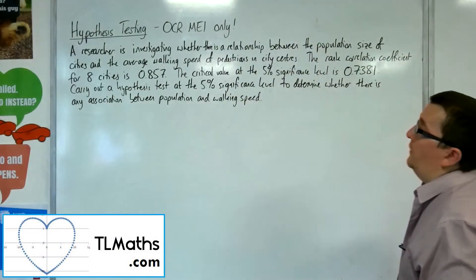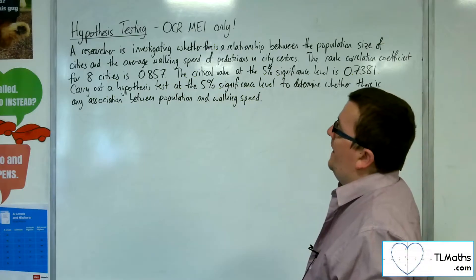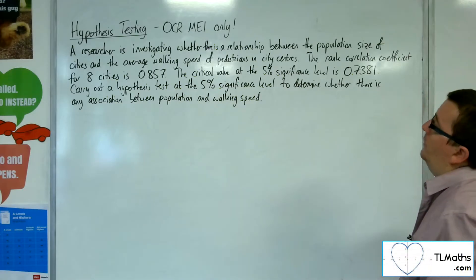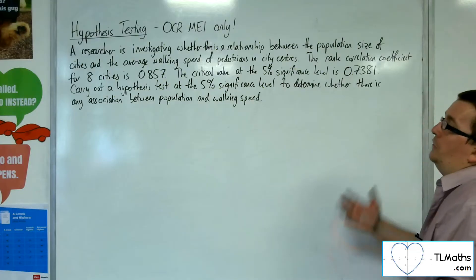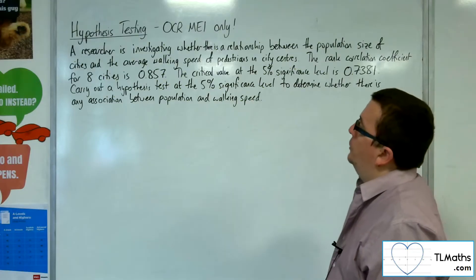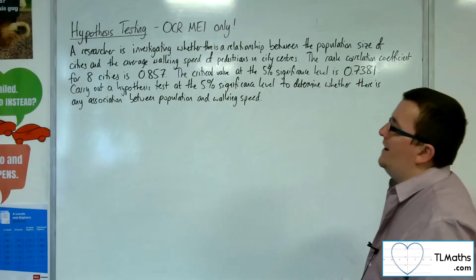A researcher is investigating whether there is a relationship between the population size of cities and the average walking speed of pedestrians in city centres. The rank correlation coefficient for 8 cities is found to be 0.857. The critical value at the 5% significance level is 0.7381.